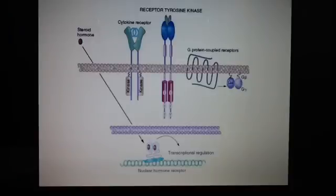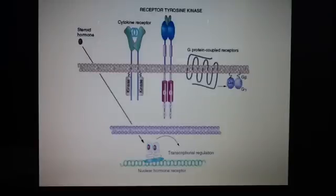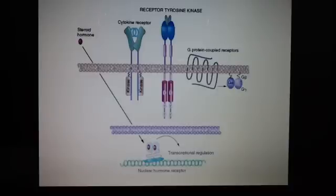As an overview of what kinases do: they are involved in phosphorylation, which means they add a phosphate. This changes the shape and results in a conformational change in the receptor, which then allows the protein to be activated. This starts the cascades we've been talking about, including second signaling and the changes that will come about in the cell.